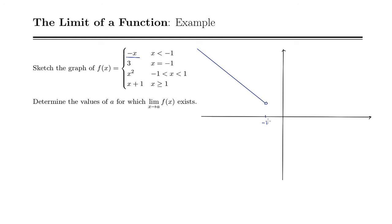Okay, then when x is equal to negative 1, we've got 3. So 1, 2, 3. We've got that point.